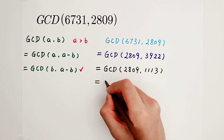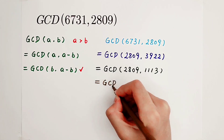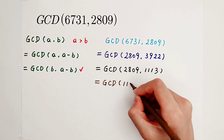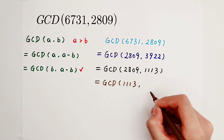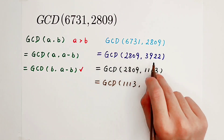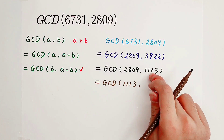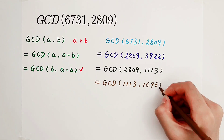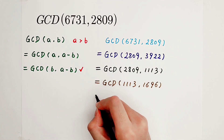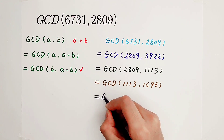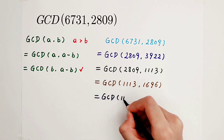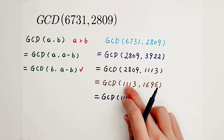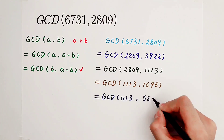Then, further. The greatest common divisor of these two numbers is equal to, firstly, the small number — now it is 1113. The subtraction of these two numbers, the big one minus the small one, is equal to 1696. Again, the small number is 1113, and the subtraction of these two numbers — the big one minus the small one — is 583.